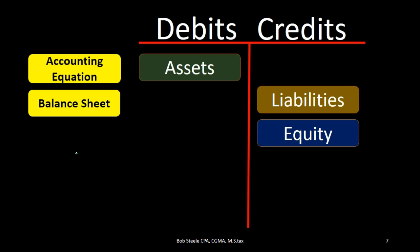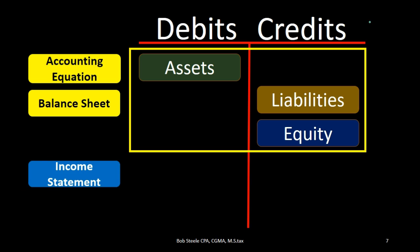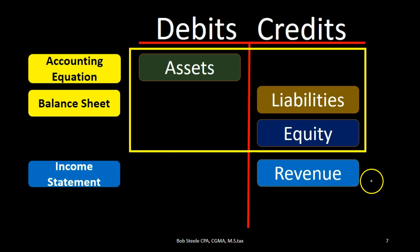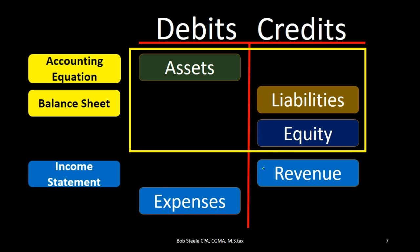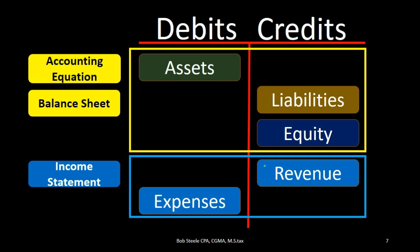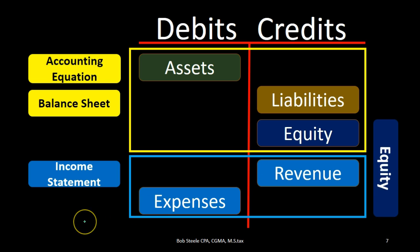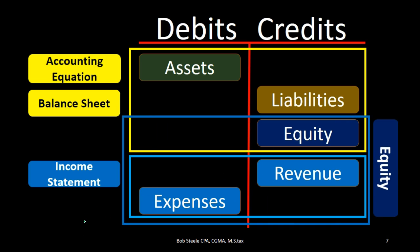Let's go through this one more time. We have the accounting equation and balance sheet: debits are assets, credits are liabilities and equity. Then we add the income statement: revenue is a credit balance account, and expenses are debit balance accounts. Revenue minus expenses — hopefully revenue is winning, meaning the credit balance is larger — and that net credit contributes to the overall credit balance of equity.